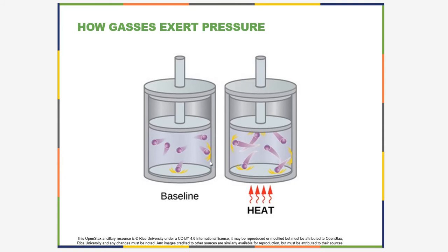Because all the molecules are moving and there are lots of them, as they hit against the walls of the container they exert a measurable pressure. One atmospheric pressure is about 14.7 pounds per square inch. We don't use psi as a common unit in chemistry — in a moment we'll talk about the more common units that we do use.